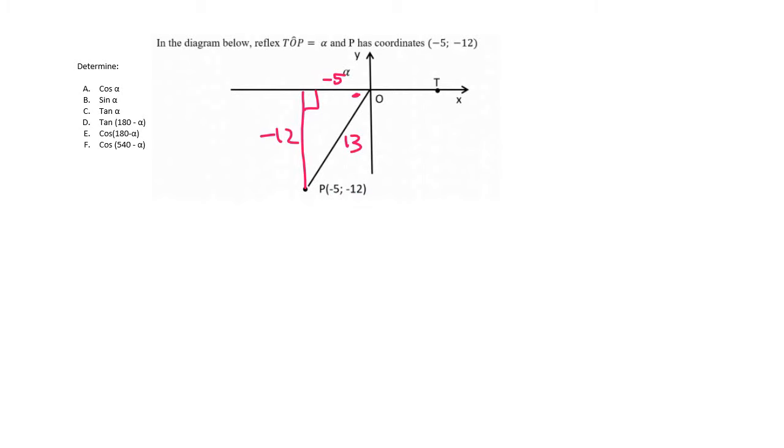And now you just pretend that we're going to work from this angle here. So now cos alpha, that's question A, cos alpha is going to be the adjacent over the hypotenuse, and so cos alpha is going to be negative 5 over 13.